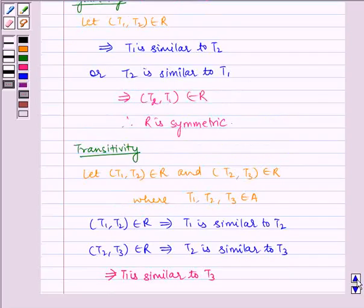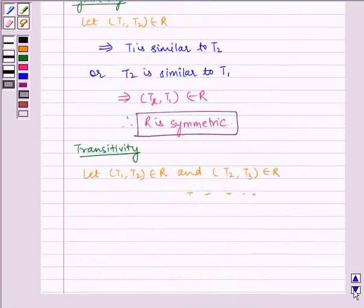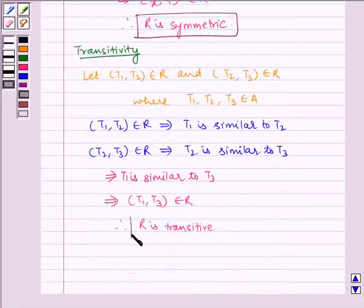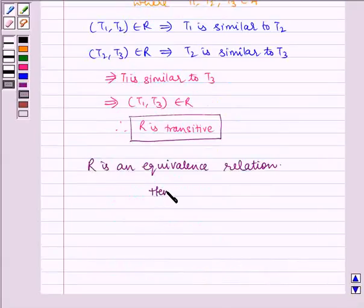Now since R is reflexive, R is symmetric, and R is transitive, R is an equivalence relation. Hence proved.